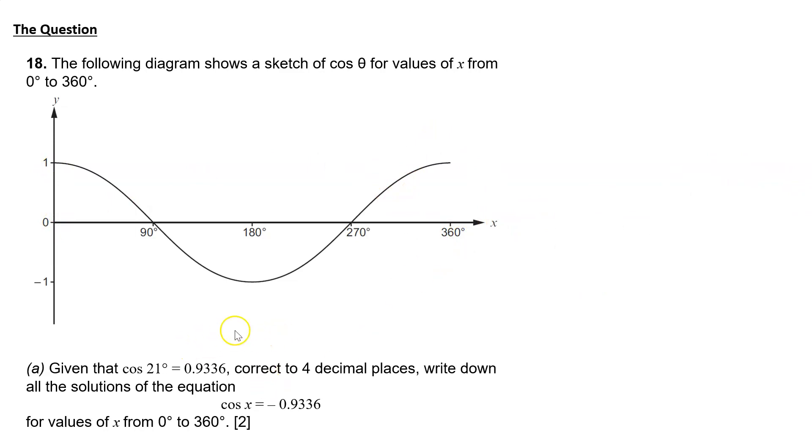Given that cos of 21 is 0.9336, correct to four decimal places, write down all the solutions of the equation cos x is minus 0.9336 for values of x between 0 and 360.